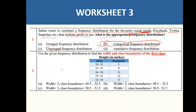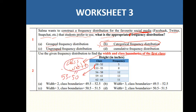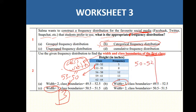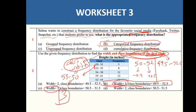Find the class width and class boundaries of the first class. The class width is 53 − 50 = 3. For the first class 50–52, the boundaries are found by subtracting 0.5 and adding 0.5, giving 49.5 and 52.5.